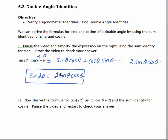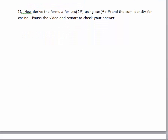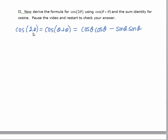I'd like you to pause the video again and do the same for the cosine of two theta by rewriting it as cosine of theta plus theta to derive a new identity. Once you've done it, start the video again to check your work. So rewriting cosine two theta as cosine of theta plus theta, letting alpha equal theta and beta equal theta, and using the sum formula, we get cosine theta cosine theta minus sine theta sine theta. We can rewrite that as cosine squared theta minus sine squared theta.